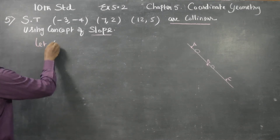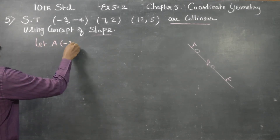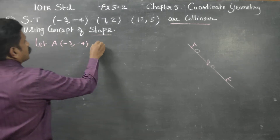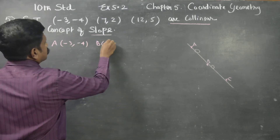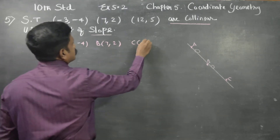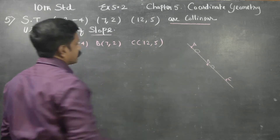Let A be equal to (-3, -3), B equal to (7, 2), and C equal to (12, 5).